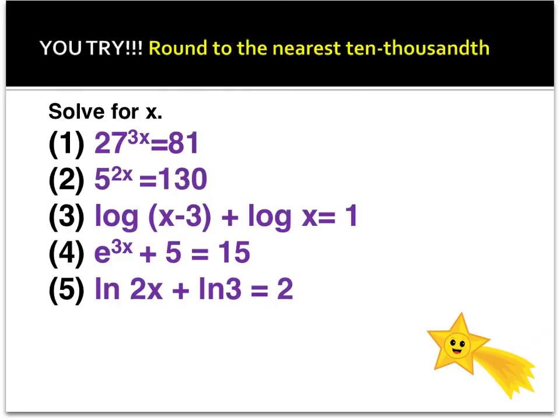I want you to go ahead and give these a try, and I will give you a few hints. Number 1, you can write as the same base. Number 2, just take the log of each side. Number 3, condense down into one logarithmic expression and then switch to exponential form. Number 4, isolate the exponential term and then take the ln of each side. Number 5, condense down and then switch to exponential form, remembering that your base is e this time.